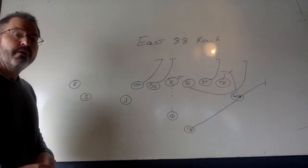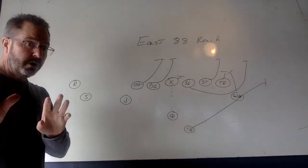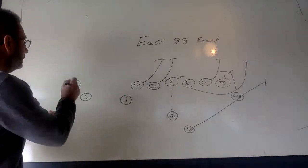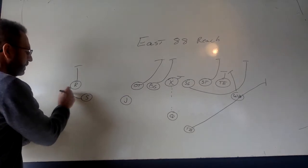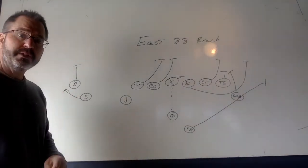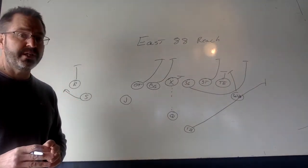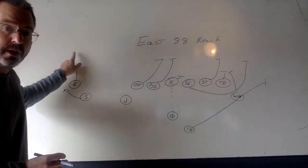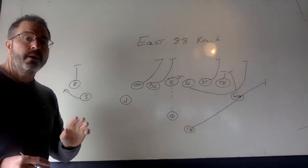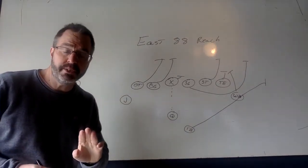Now, over here, for our receiver and slot, we are going to do what we did last year, which is a simple bubble screen off it. Where the receiver blocks the number one player or the most dangerous man. And the slot runs a little Nike swoosh. I'll go over this in more detail.